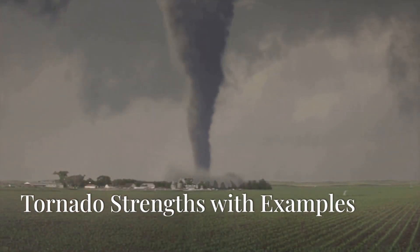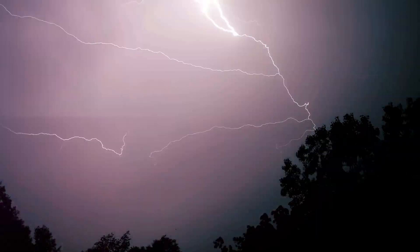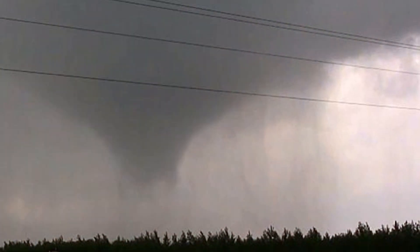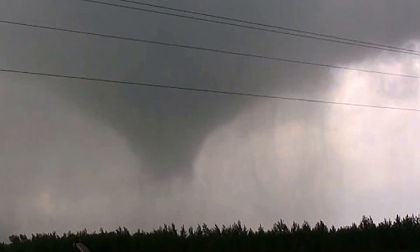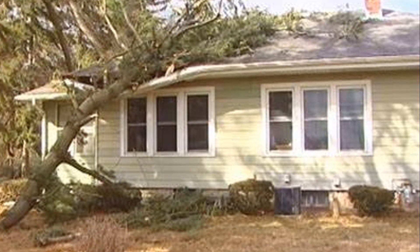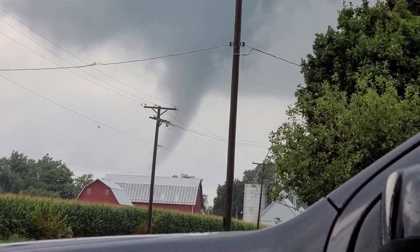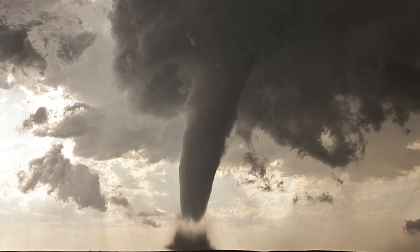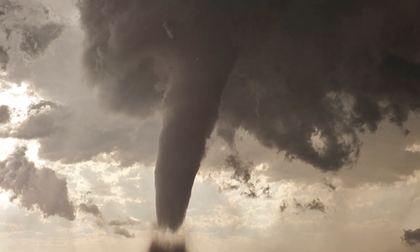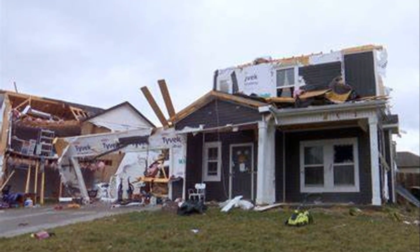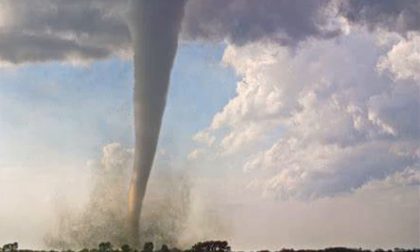Tornadoes are rated by their strength on the Enhanced Fujita (EF) scale. An EF0 is the weakest, with winds from 65 to 85 mph — it can damage roofs and break branches but is usually not life-threatening. EF1 tornadoes have winds from 86 to 110 mph and can flip cars and tear off roofs. EF2 tornadoes, with winds from 111 to 135 mph, can destroy mobile homes and uproot trees.